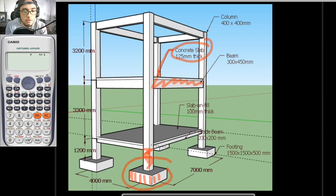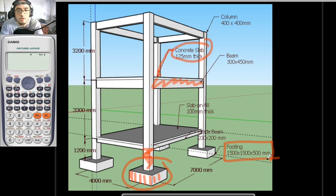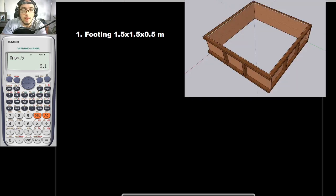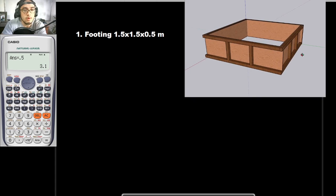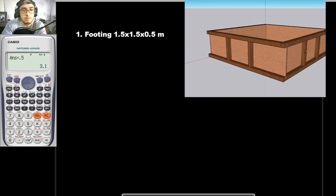Let's solve for the formworks for this footing right here. The footing has a dimension of 1.5 by 1.5 by 0.5 meters, or 1500 by 1500 by 500 millimeters. With those dimensions, if we are to fabricate its formworks, it would basically look like what you are seeing right now — this is what its formworks would look like if it is to be fabricated.